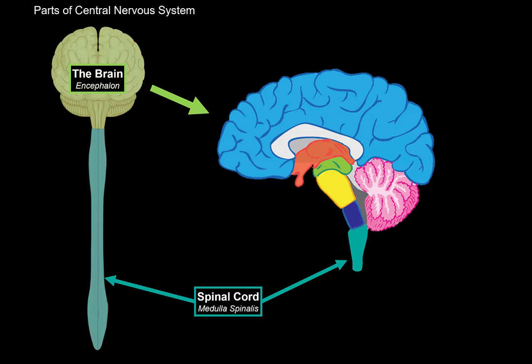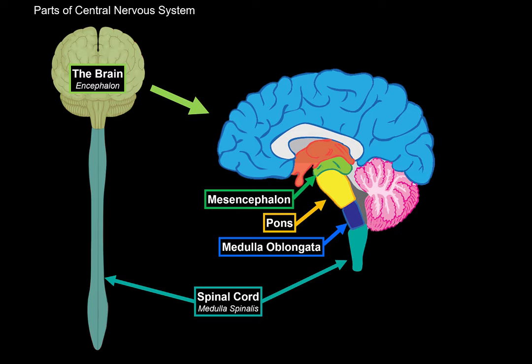The brainstem consists of the medulla or the medulla oblongata, the pons and the mesencephalon. And then behind the brainstem, we'll find the cerebellum, which is an essential part of the brain for muscle memory.